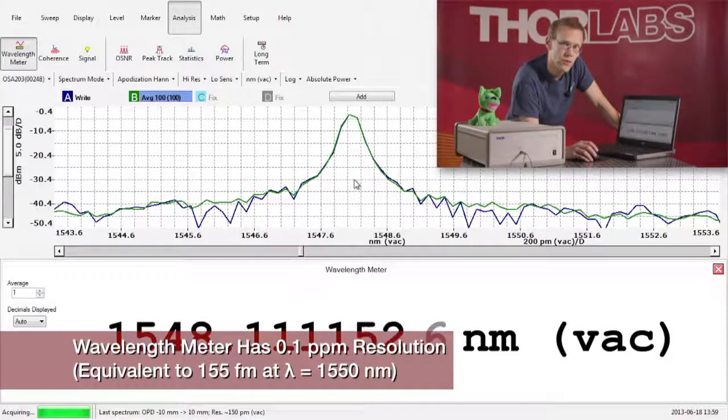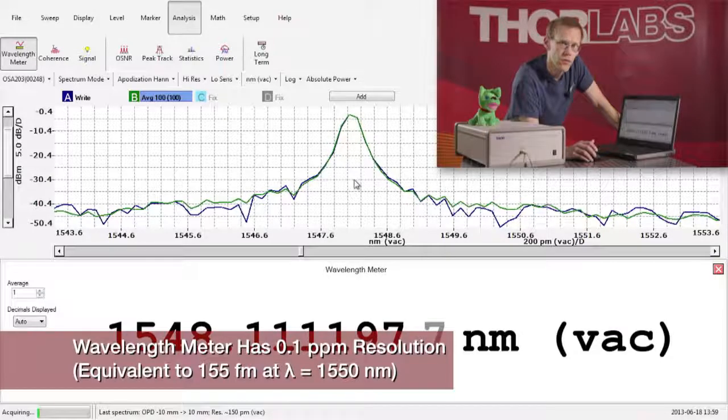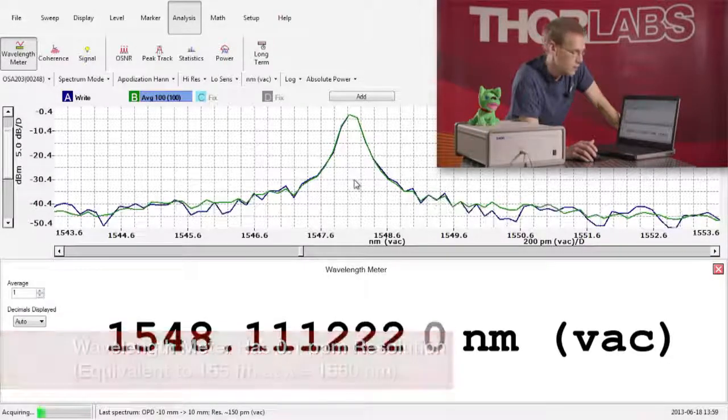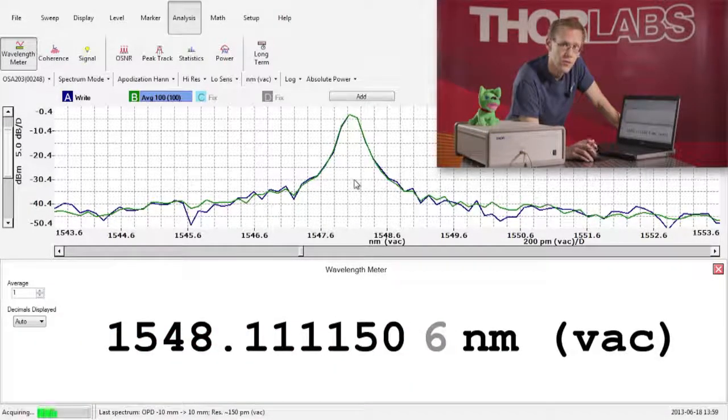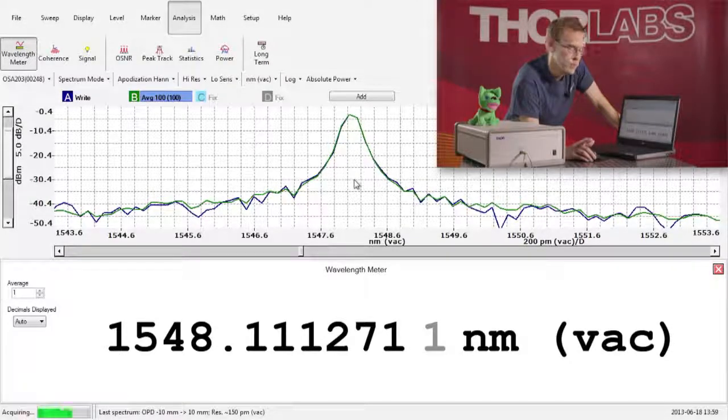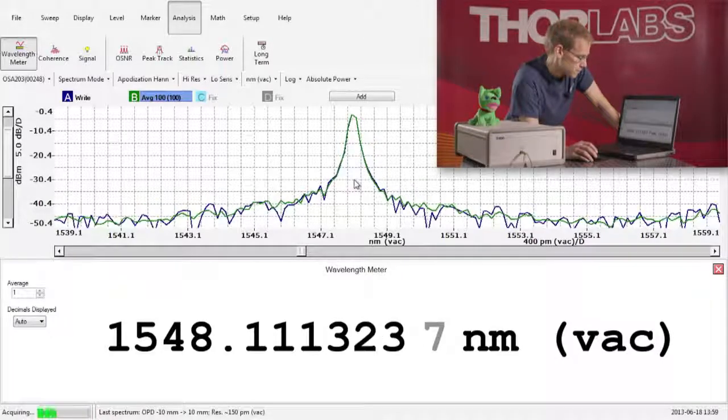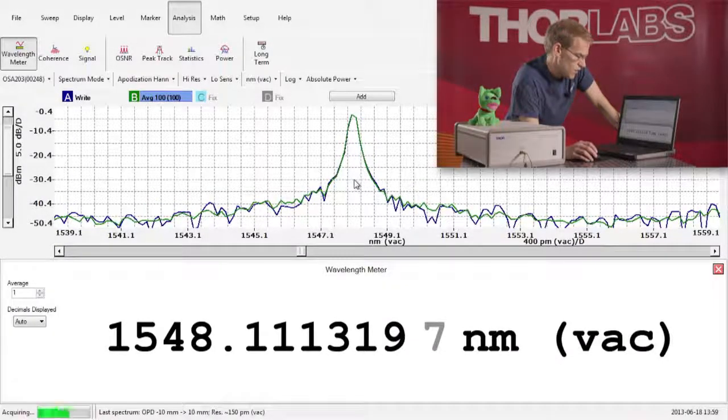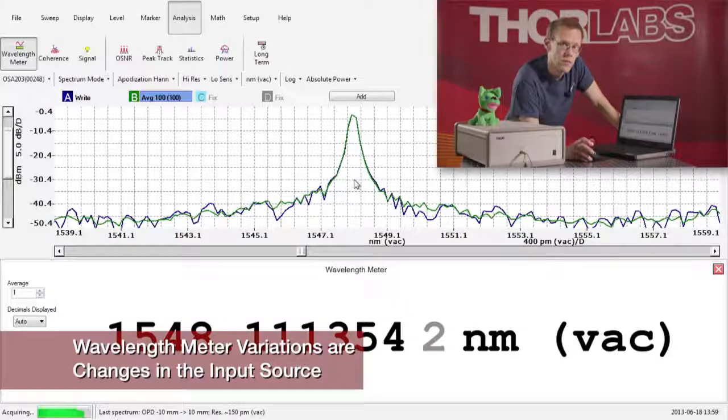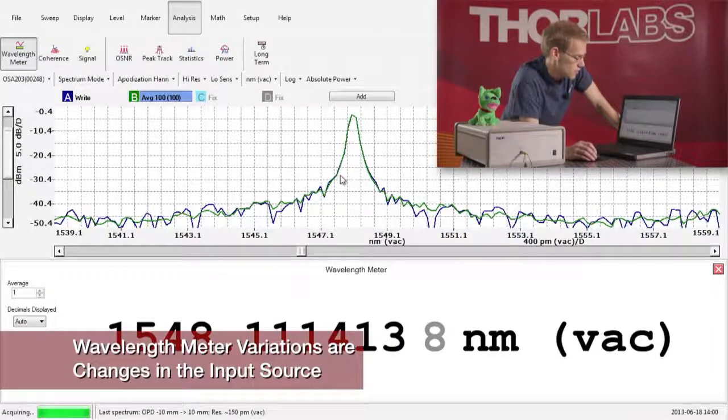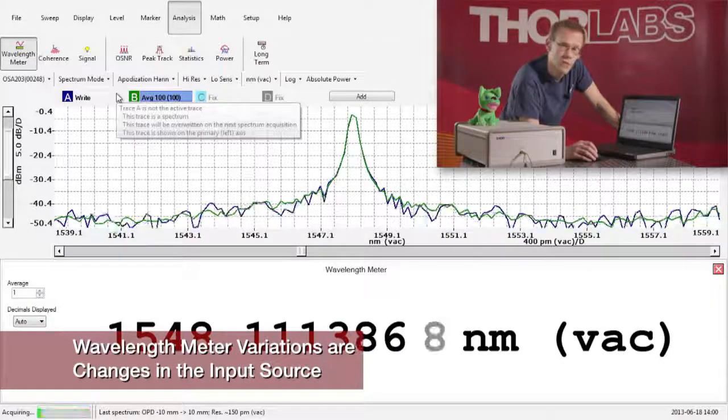This performs a very accurate calculation of the center wavelength of the input light and it's required that there is only one very strong peak inside the input light. The calculation is performed on the interferogram and is not depending on which trace is currently active.